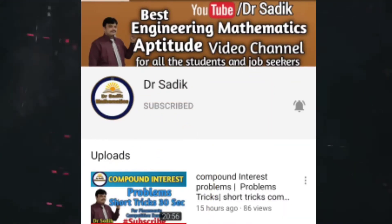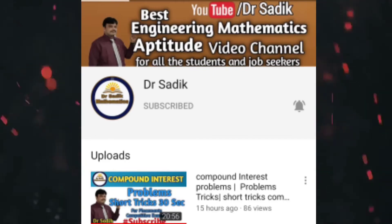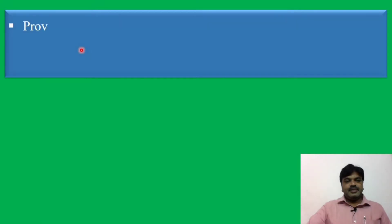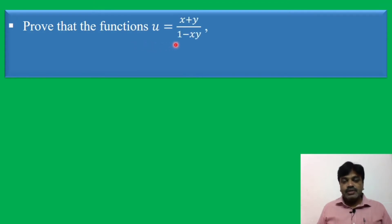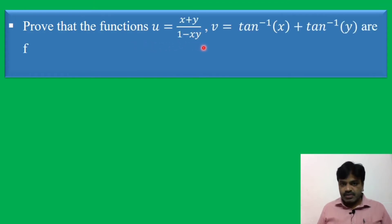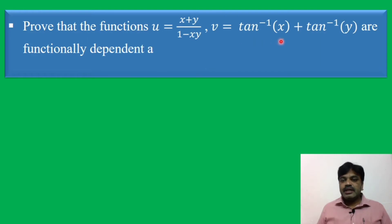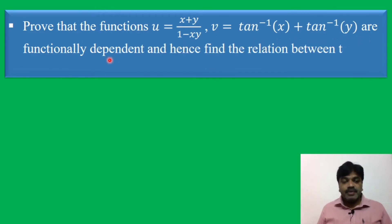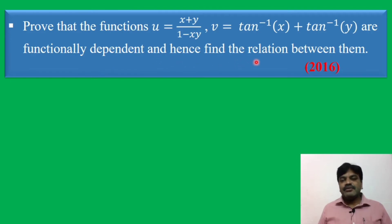Subscribe to Dr. Sadiq Mathematics channel for getting more online videos. Prove that the functions u = (x + y)/(1 − xy) and v = tan⁻¹x + tan⁻¹y are functionally dependent, and hence find the relation between them.